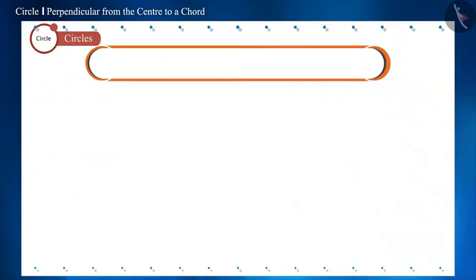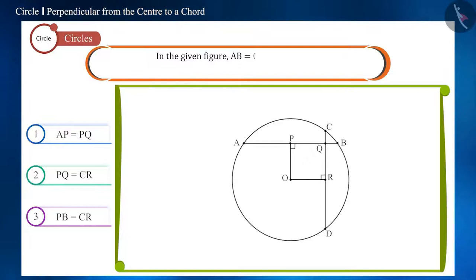Let's see the question. In the given figure, chords AB and CD are equal. And line segments OP and OR are perpendicular to chords AB and CD respectively. Check the options given below and identify the correct option.